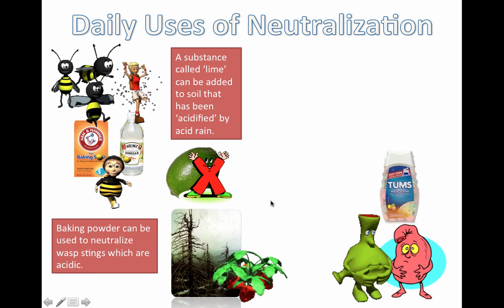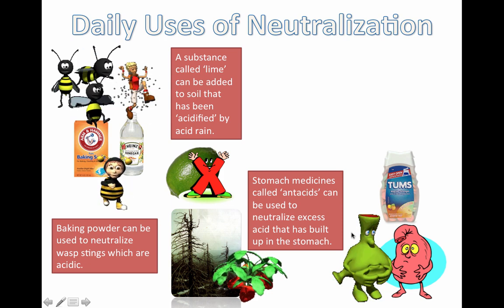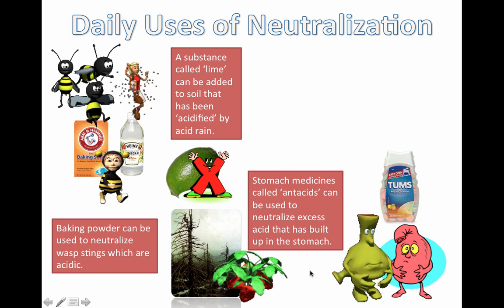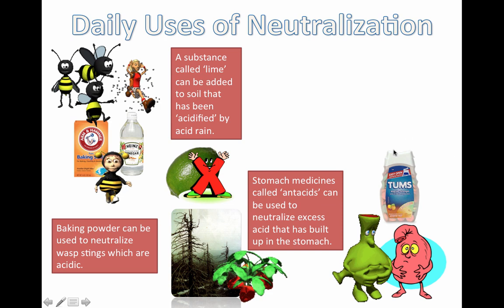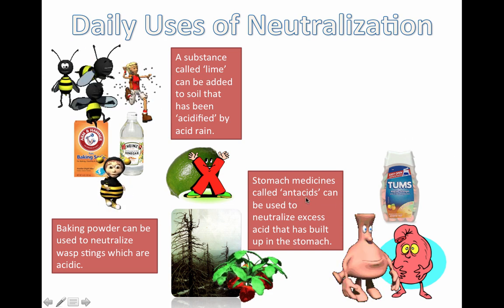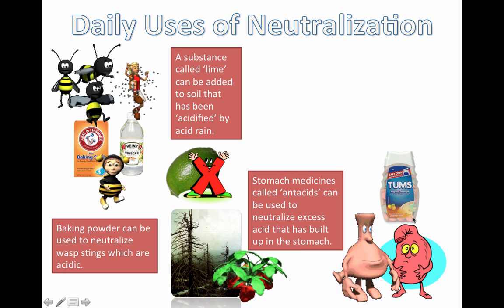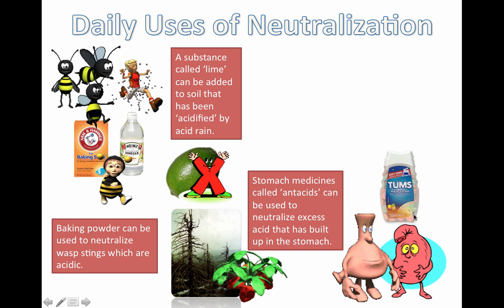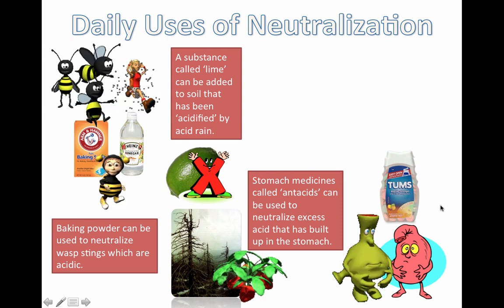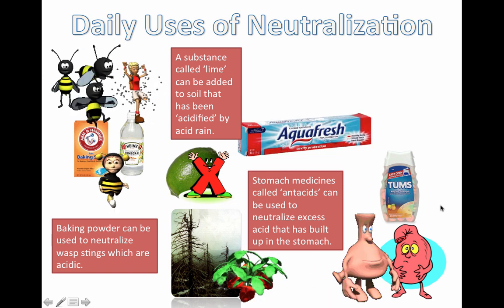When you have a stomach ache, it's often because of excess acid that has built up in the stomach — you're producing a lot of extra acid. A lot of stomach medications are actually called antacids — that sounds like anti-acid, or going against the acid. And what works as an antacid? Alkaline substances. Inside those medications you'll find things like magnesium hydroxide and calcium hydroxide. Those are very typical alkalis used in medications for neutralization.